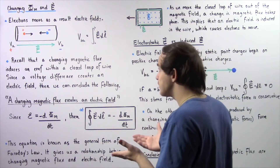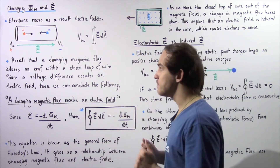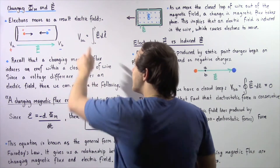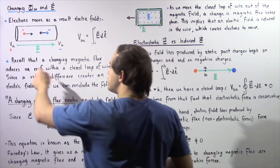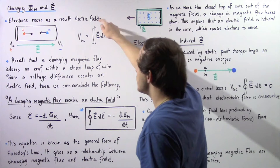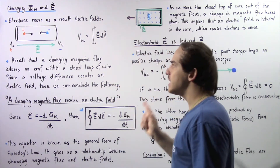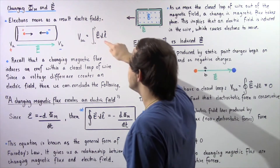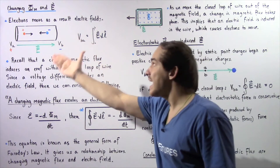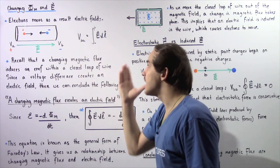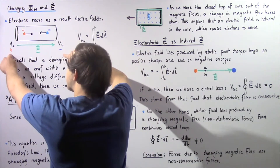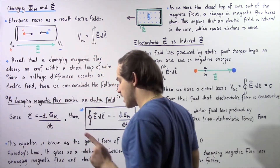In a previous lecture, we were able to define the relationship between voltage difference and our electric field. We said that the voltage difference between two points A and B within our wire is equal to the integral from A to B of the dot product of the electric field and our infinitely small distance given by dl. So electrons move as a result of an electric field that is created because of an electric potential difference, because of a voltage difference.